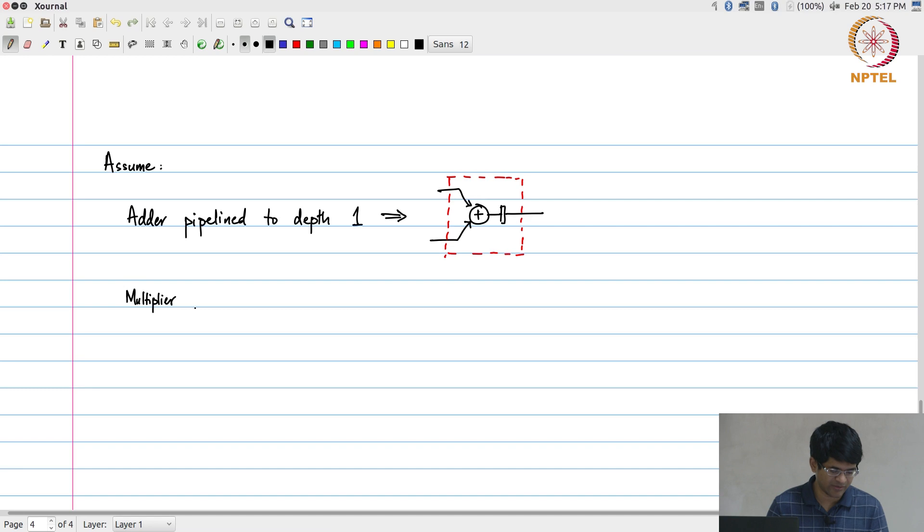In terms of the multiplier, I'm going to assume that I have a multiplier which is pipelined to a depth of 2. I will draw it as something looking like this - two registers at the output. Why would I ever create a multiplier like this where I have a multiplication and then follow it by two registers?